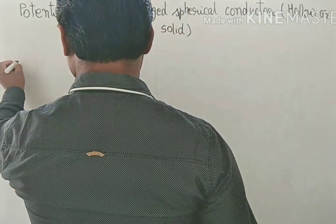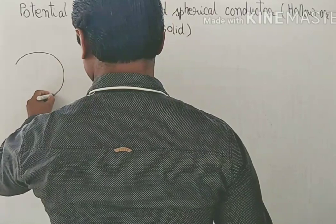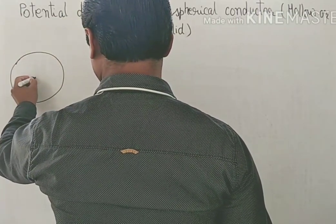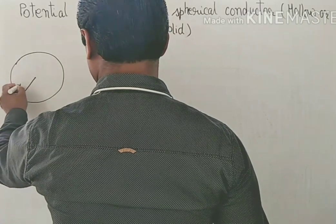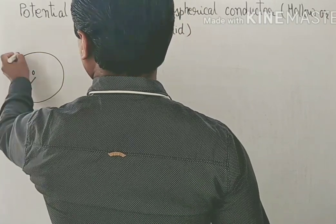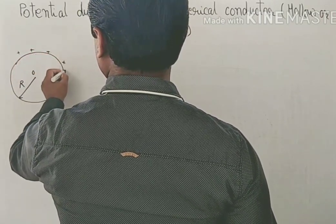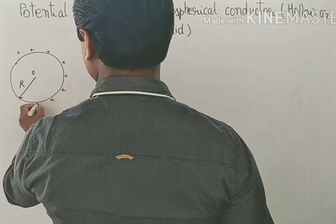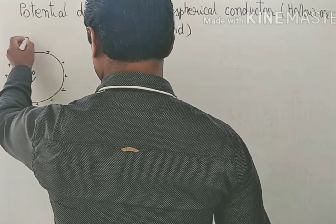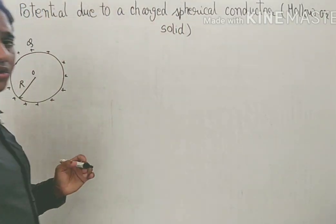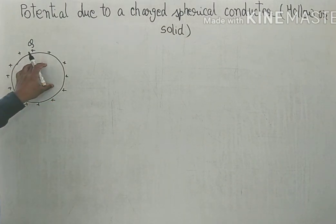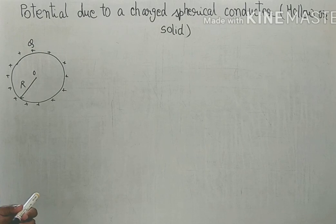Suppose we have a sphere of certain radius capital R, with centre O. We are having positive charges spread on its surface, and the total charge is capital Q. Due to this uniform distribution of charges on its surface, we need to calculate the potential at certain points.